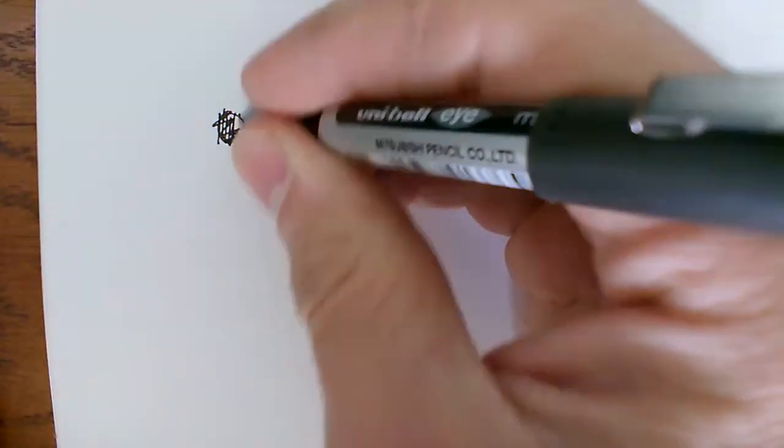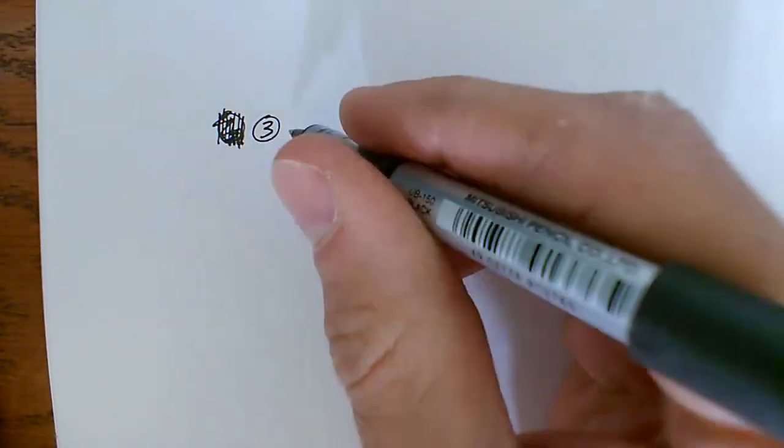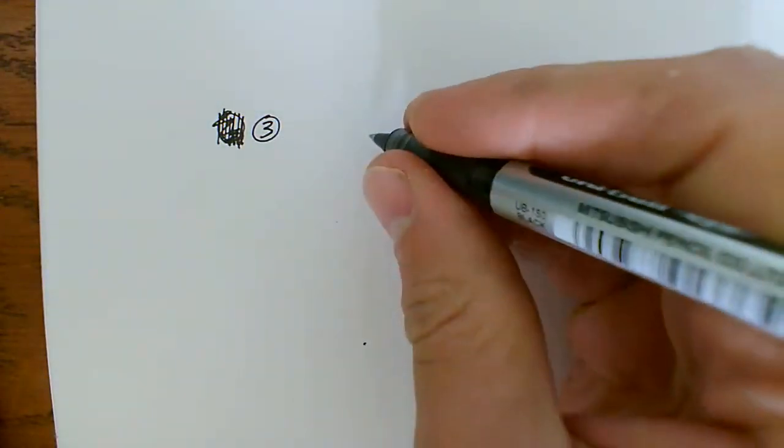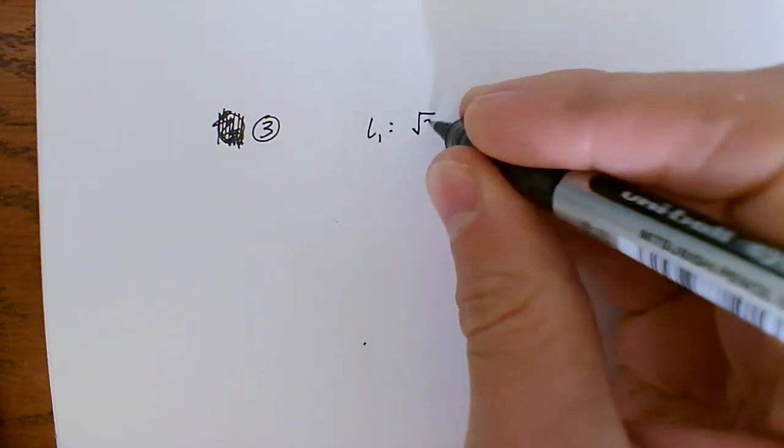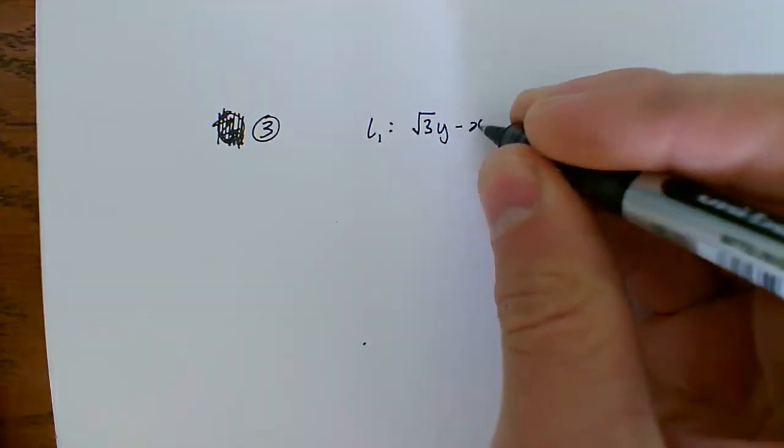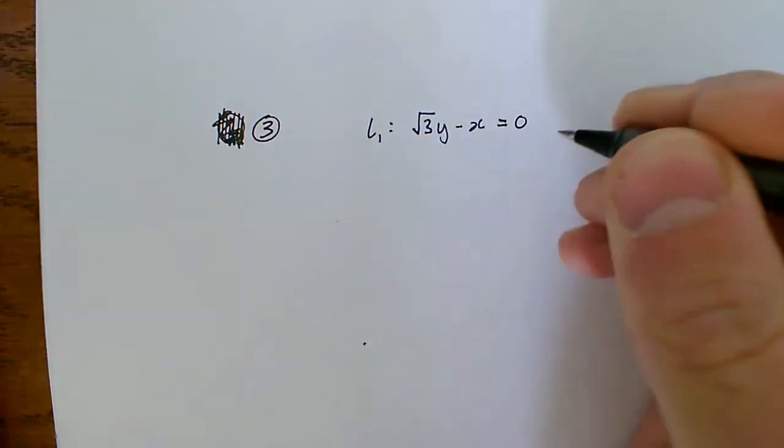Okay, so now we have a look at question 3. Sorry, it's not question 2, just misnumbered. So question 3, we've got L1, just writing out the information. The question here is root 3y minus x equals 0.